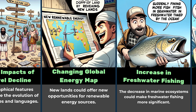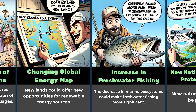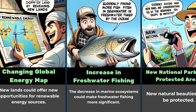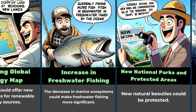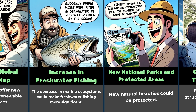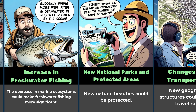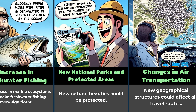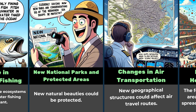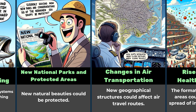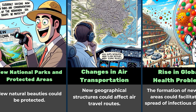The decrease in marine ecosystems could make freshwater fishing more significant. New national parks and conservation areas with new natural beauties could be protected. New geographical structures could affect air travel routes and changes in air transportation.